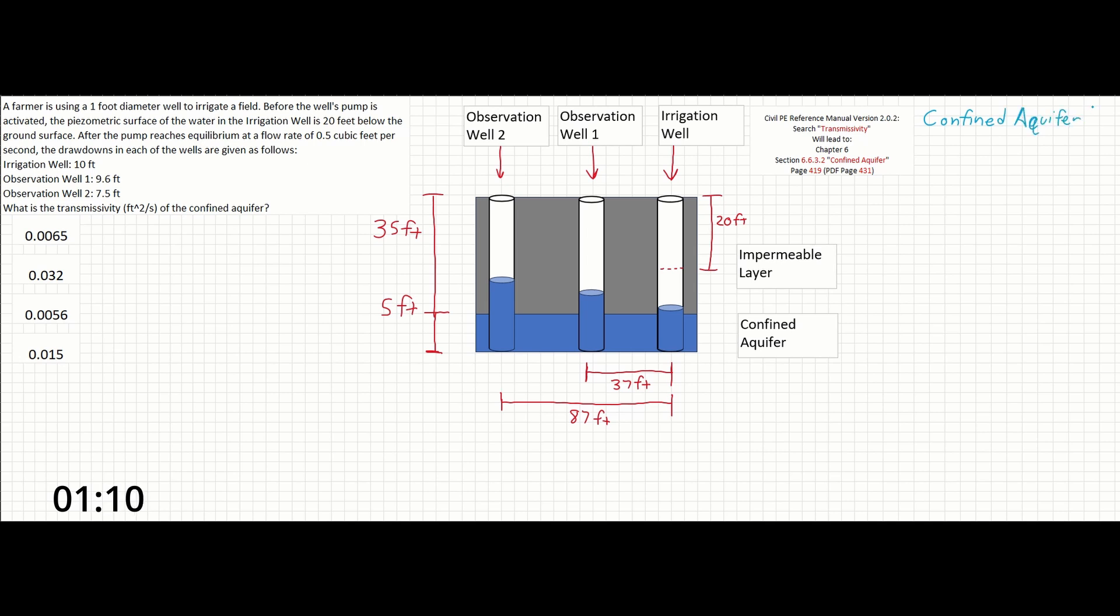The equation that transmissivity is in here is the uniform flow or Thiem equation. Let's write it out. The Thiem equation, or the uniform flow equation, is given as Q equals 2 pi T times the quantity of H2 minus H1 over the natural log of R2 over R1.